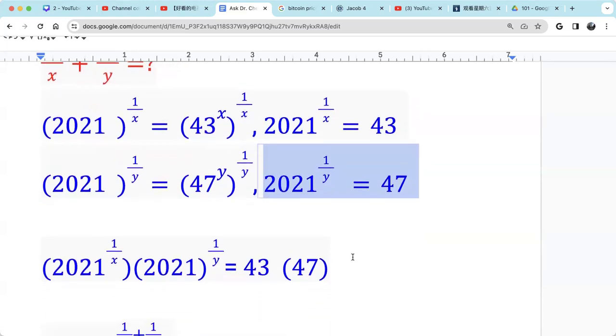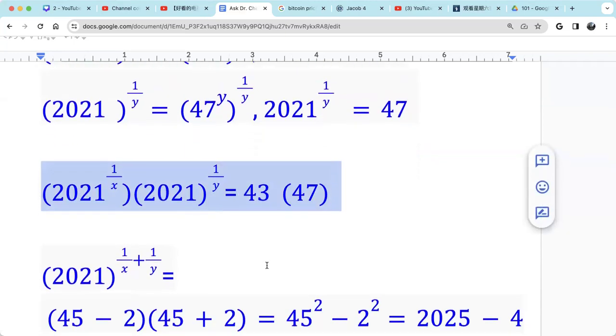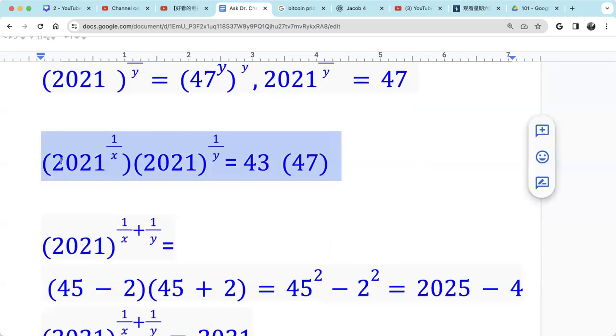We multiply those two equations because we have the same base, 2021. So when we multiply those two, we construct 1 over x plus 1 over y in the exponent. Same base, 2021, so we can add the exponents when we multiply. So now we have constructed 1 over x plus 1 over y.